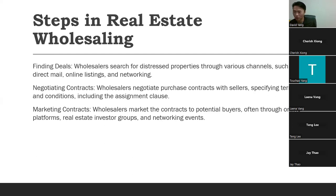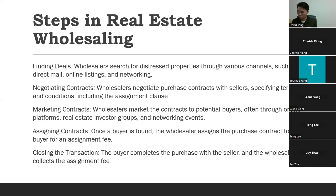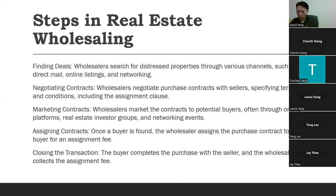Look for cash investors with a track record of closing flips and rental properties — those are your real buyers. Once a buyer is found, the wholesaler assigns the purchase contract to the buyer for an assignment fee. At closing, the buyer completes the purchase with the seller and the wholesaler collects the assignment fee. Understand the full process: getting documents signed between wholesaler and original owner, getting the assignment contract signed between wholesaler and end buyer, and sending everything to the title company so they can handle the splits.